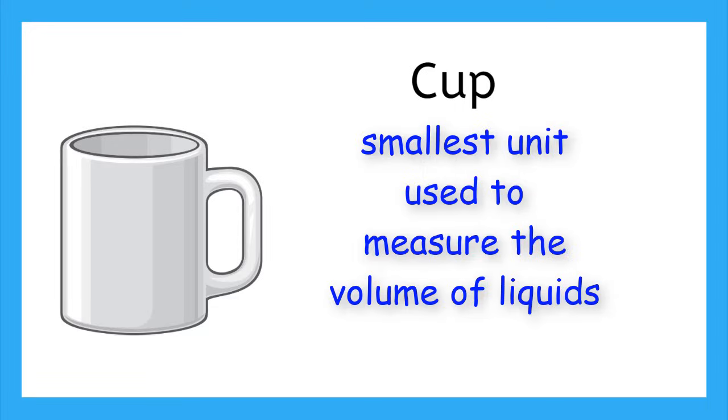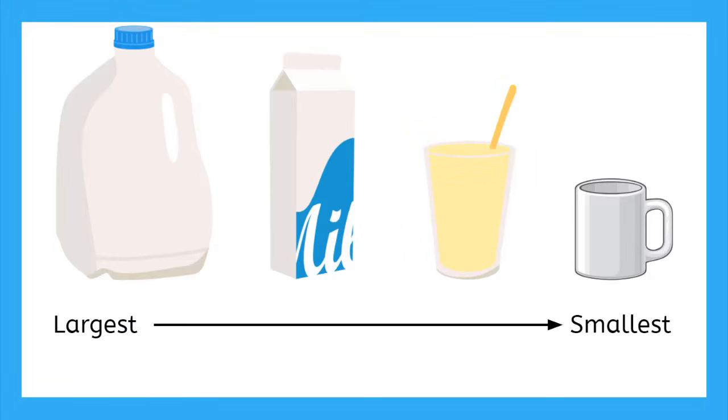Now how do these units all compare to each other? Here we have them ordered from largest volume to the smallest volume. Now let's look at how these units compare to each other numerically or with values.